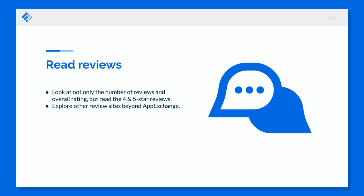We recommend looking not only at the number of reviews or the overall rating — both of those can be pretty deceptive. A five-star overall rating with only one or two reviews doesn't tell you a lot. Go ahead and read the four and five-star reviews, and even the one-star reviews. Figure out what people love and don't love about these applications. We also recommend exploring sites beyond the AppExchange, like G2, that offer really great comparison tools specifically when evaluating Salesforce applications.